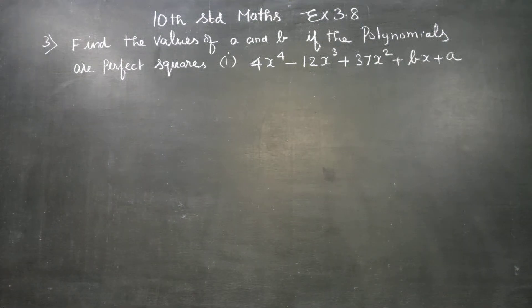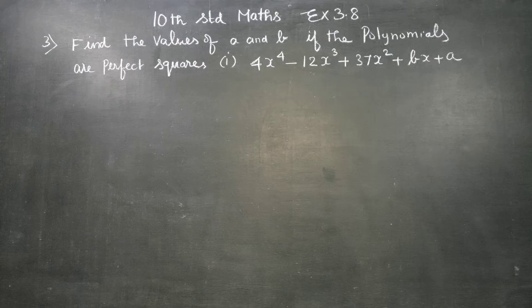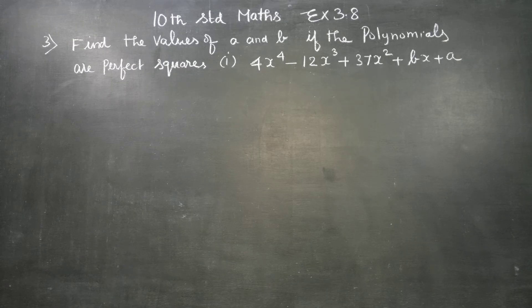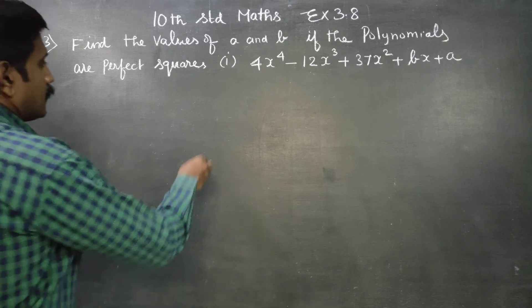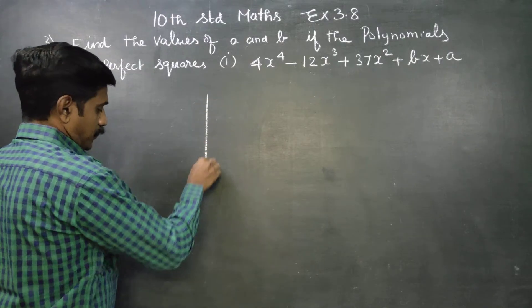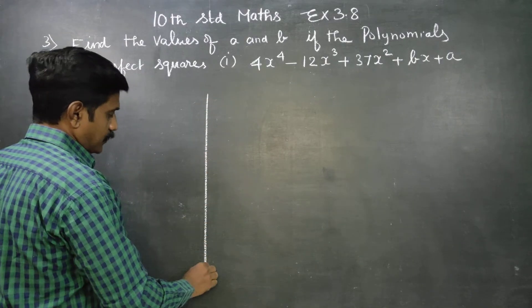Dear 10th standard students, in exercise number 3.8, find the values of A and B if the polynomial is a perfect square. Given the polynomial is a perfect square, I am going to start my square root sum.